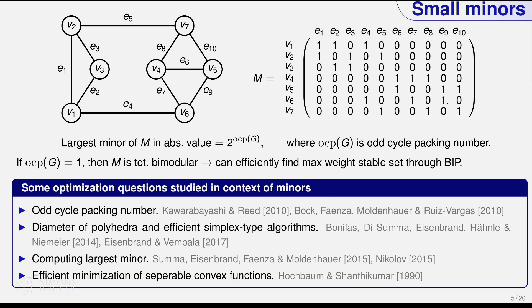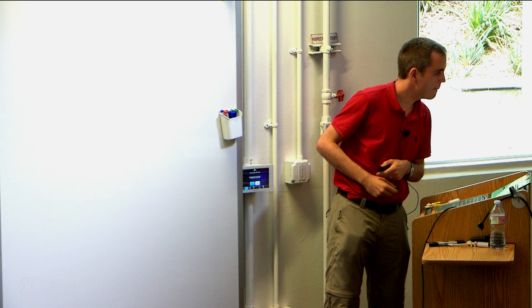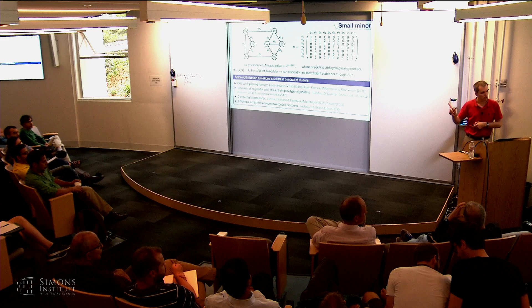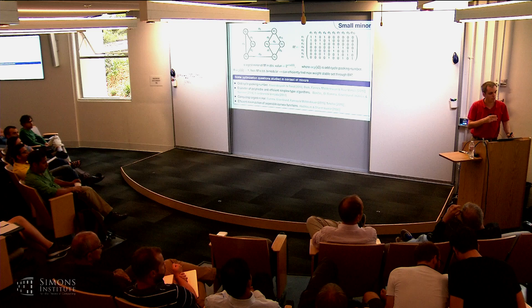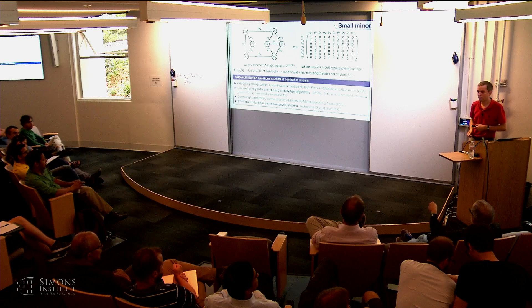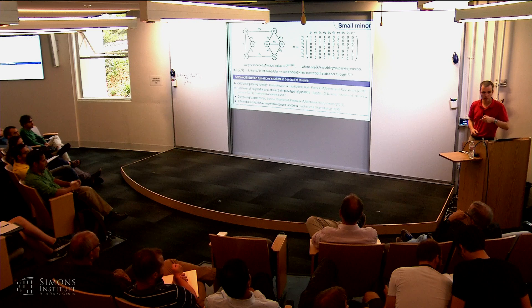In a BIP, you can also have negative numbers — this incidence matrix example just happens to be 0-1, but that's just the example's property, not part of the BIP definition. As for how hard the proof is about the largest minor — it's actually quite simple, provable in two or three minutes offline.